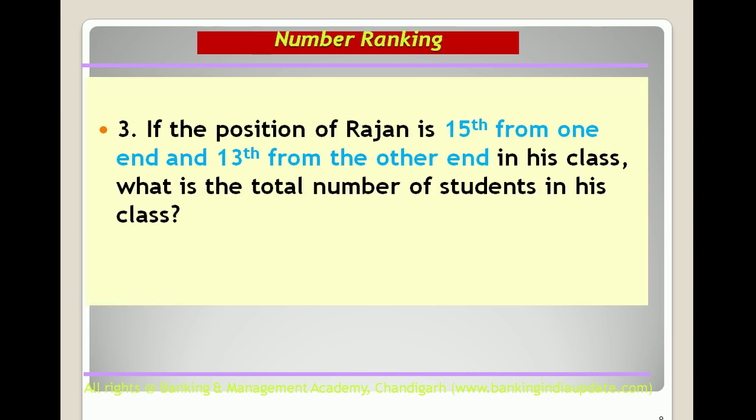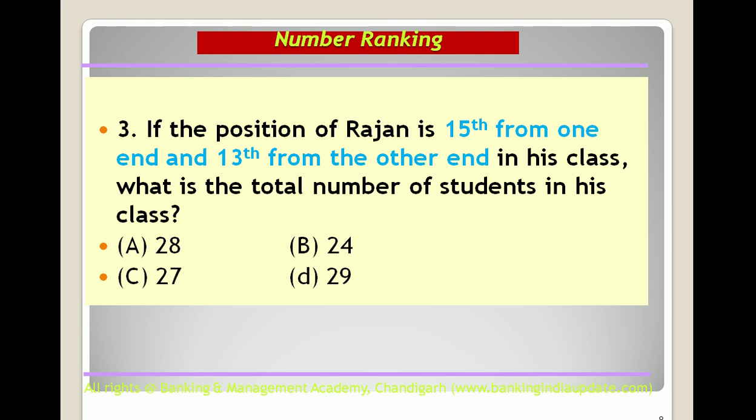Next question: the position of Rajan is 15th from one end and 13th from the other end in his class. What is the total number of students? Using the shortcut: add the two positions — 15 + 13 = 28 — then subtract 1 because Rajan is occupying the same position from both sides and is counted twice. So 28 − 1 = 27. The answer is option C.